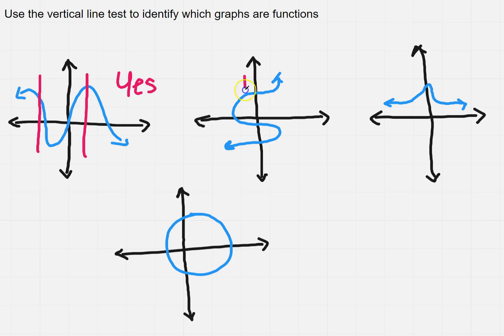Now if I look at the second one, if I draw a vertical line here, oh my goodness it went through three points. Well right off the bat I don't even need to draw anything else. I just know that this is not a function.